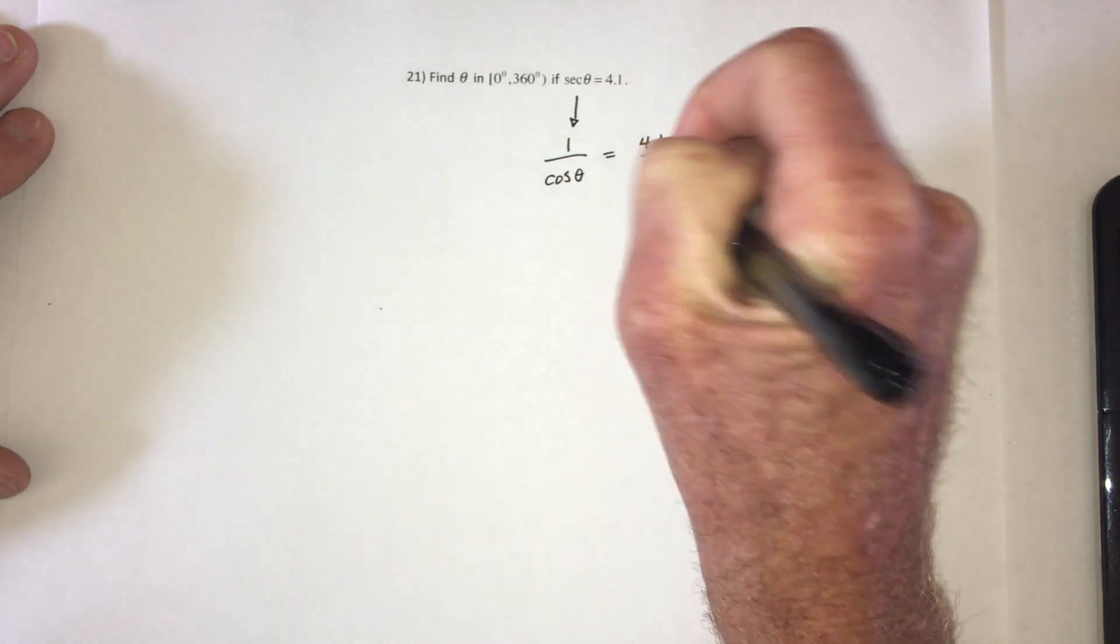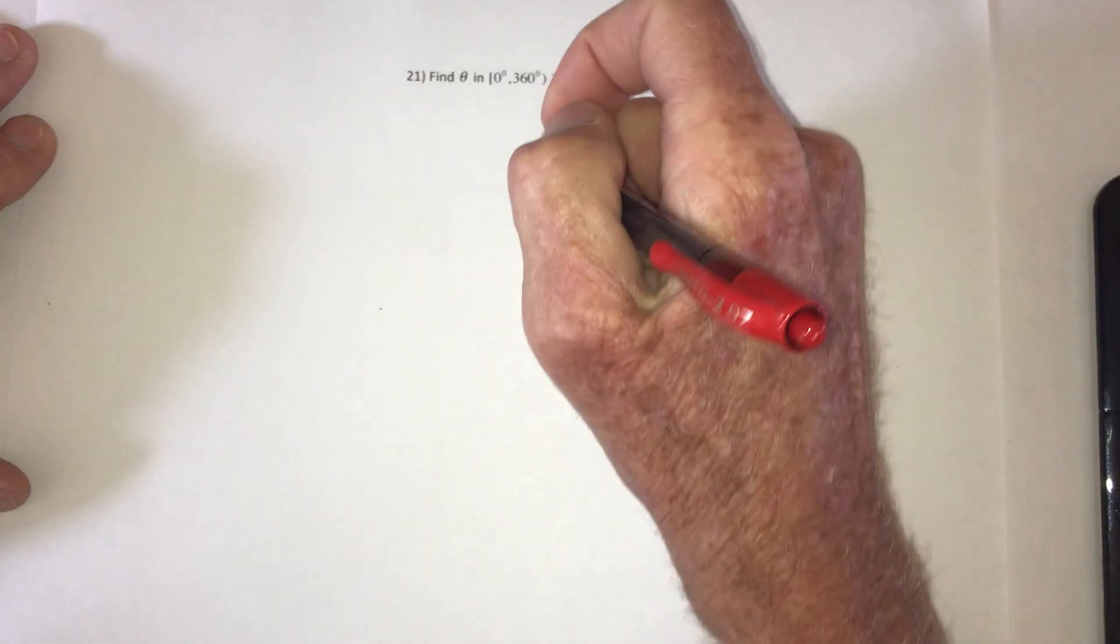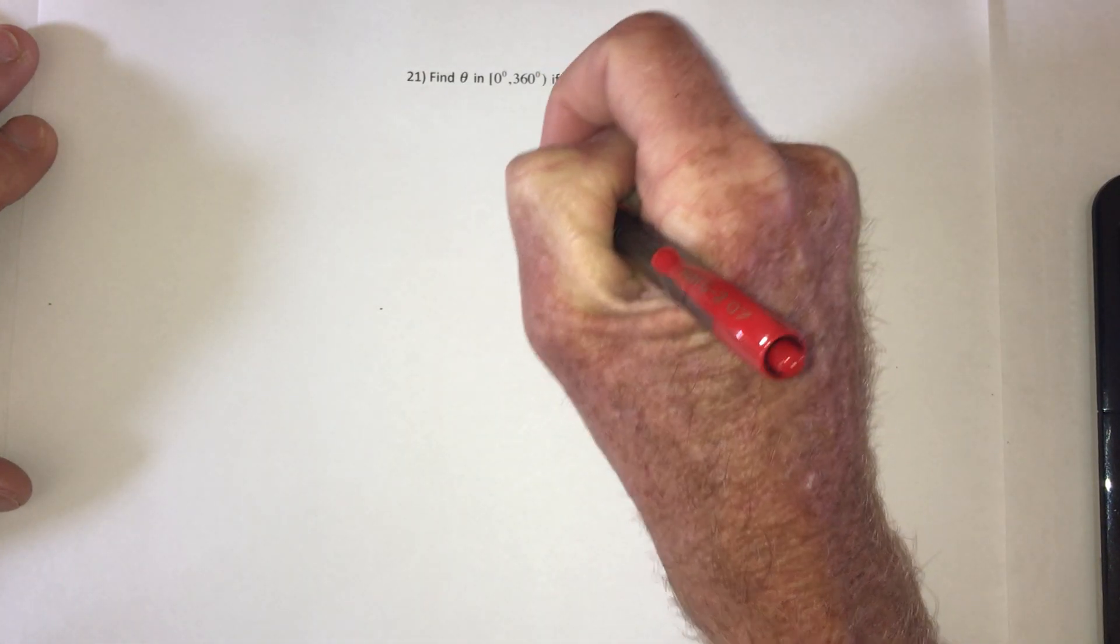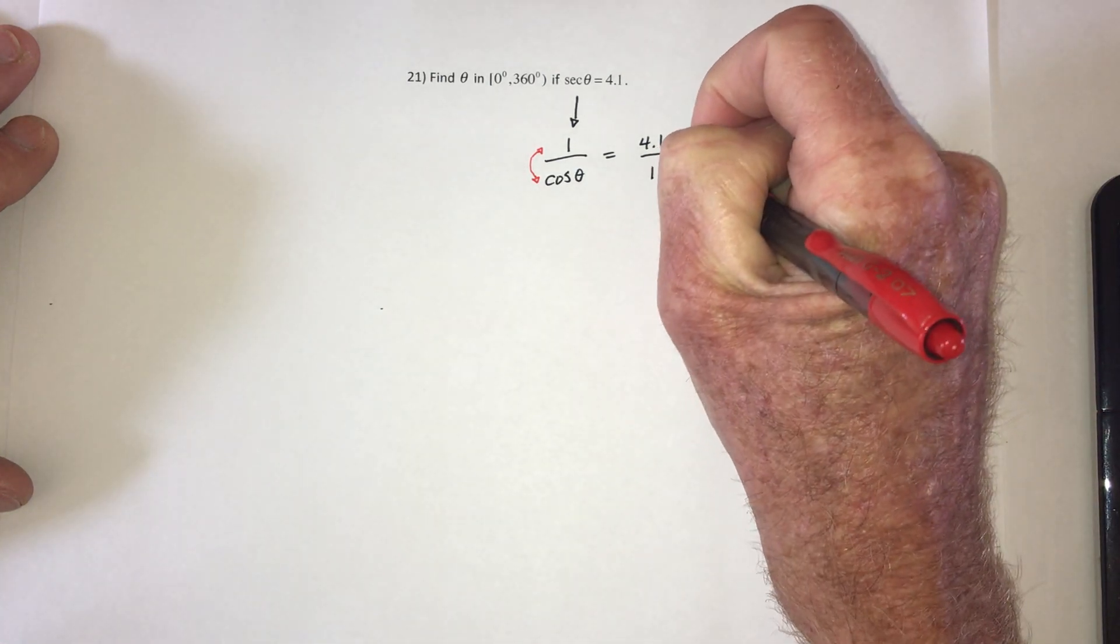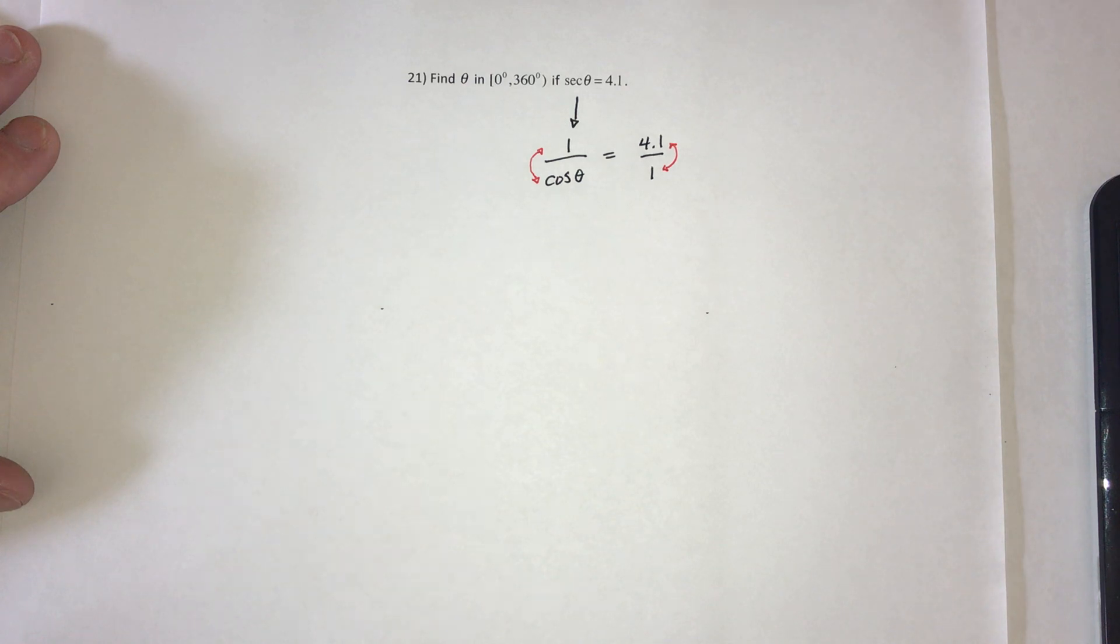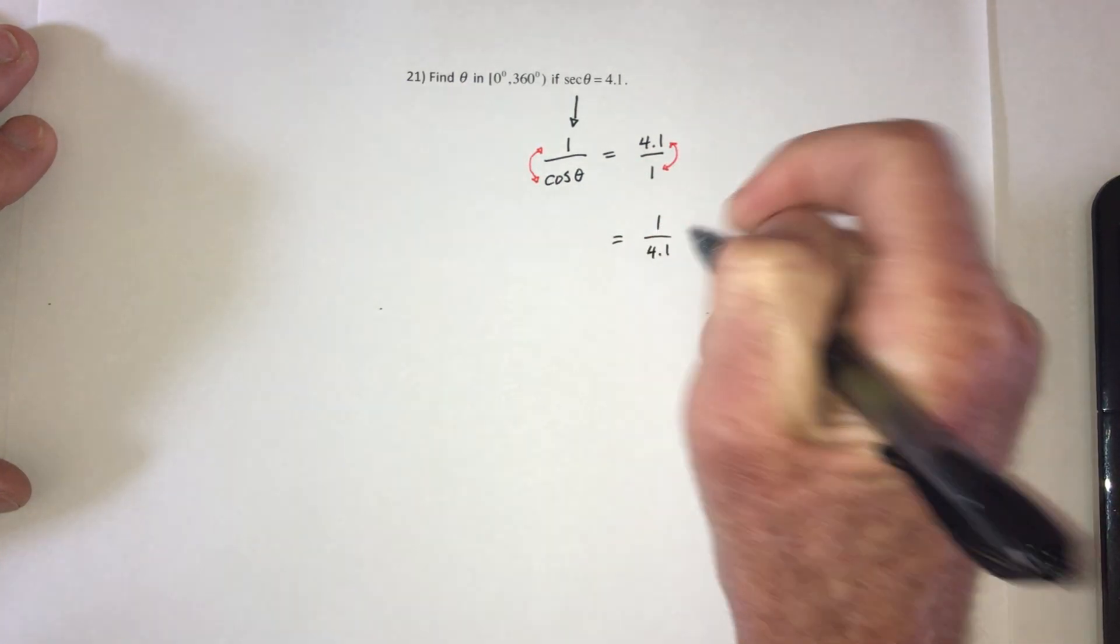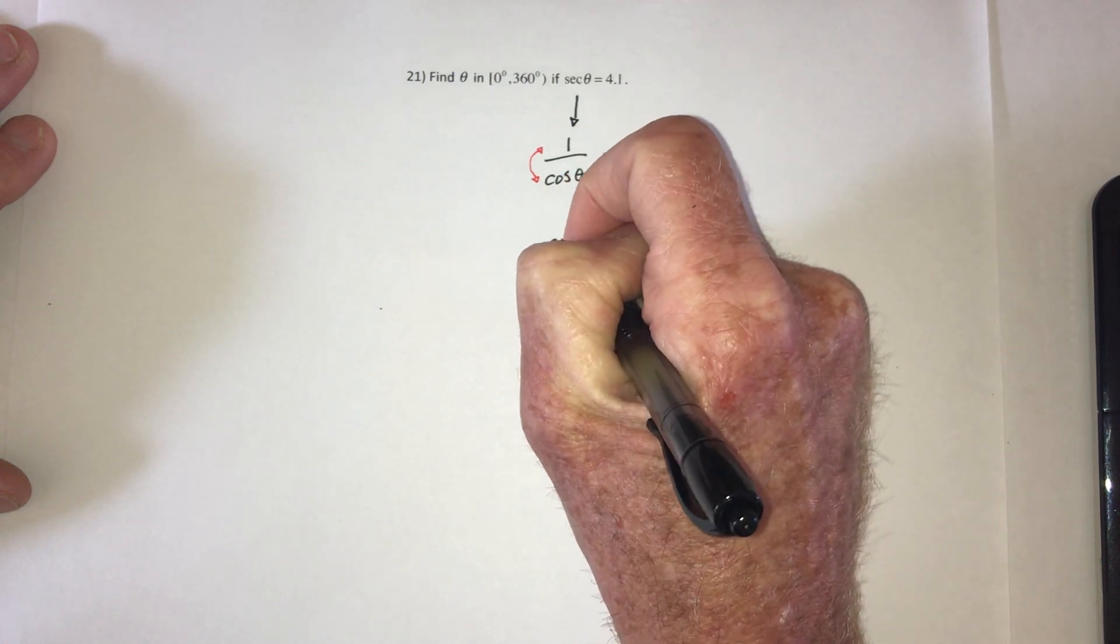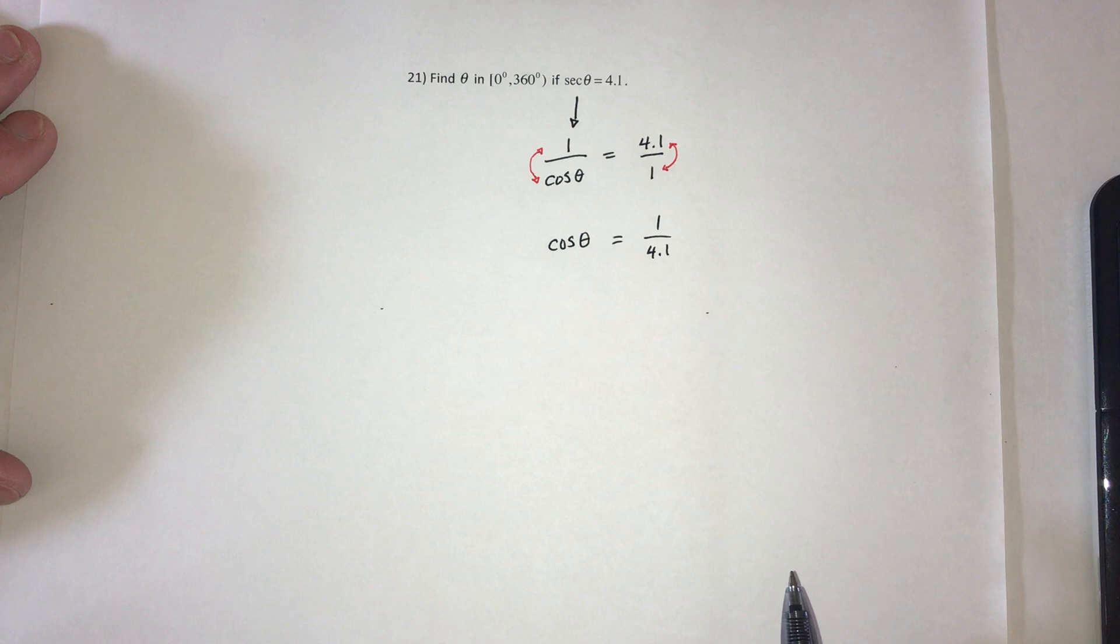And then I'm going to take the 4.1 and just rewrite it as 4.1 divided by 1. Then invert this side so it becomes cosine over 1. If you invert one side, you have to invert the other side, so the right side will become 1 over 4.1. And the left side becomes cosine of theta over 1, or in other words, just cosine of theta.